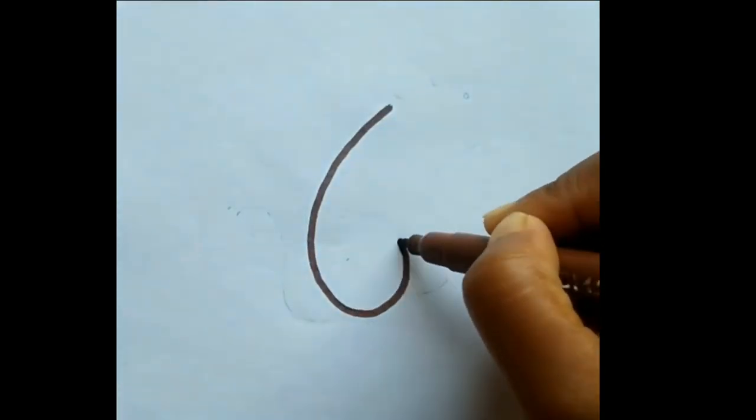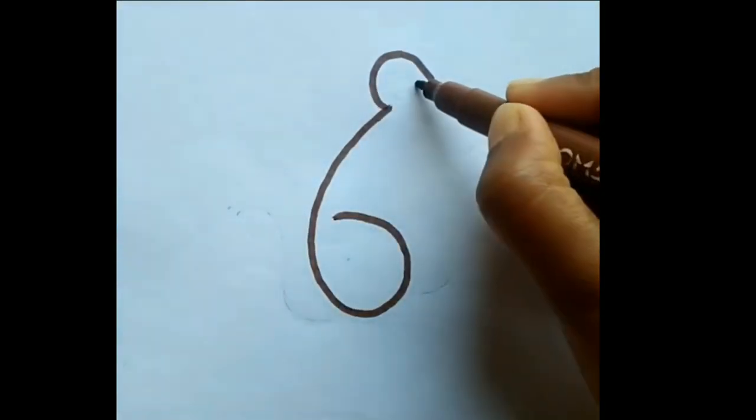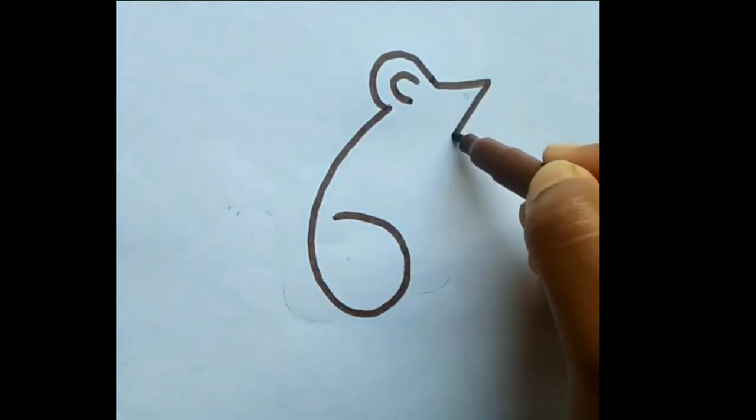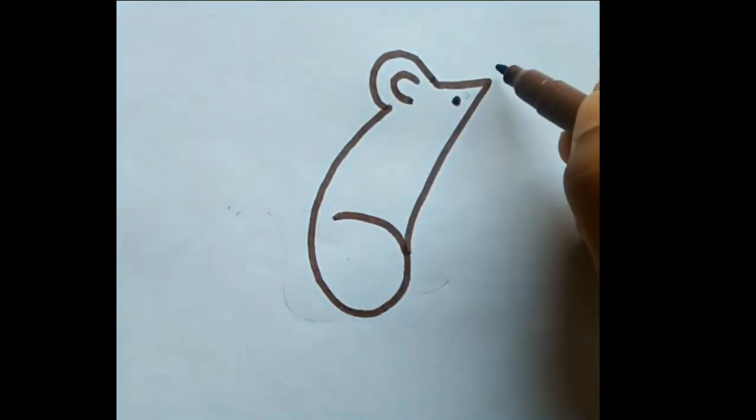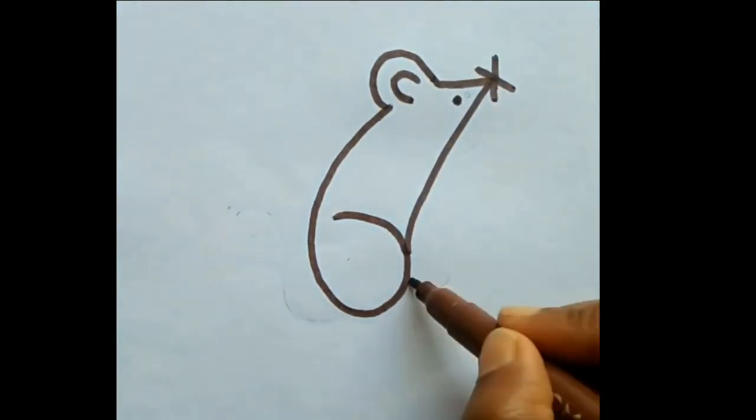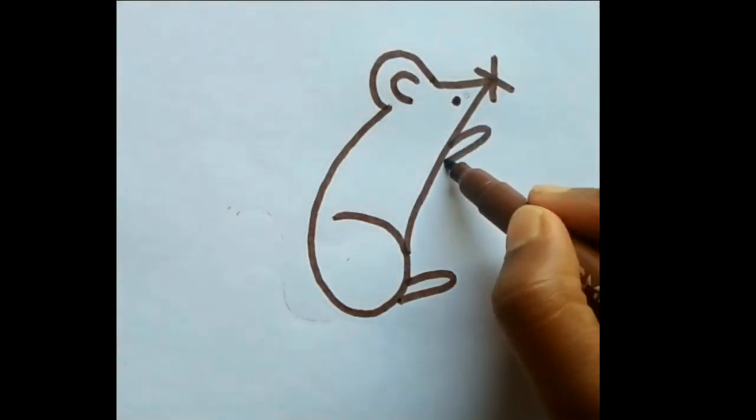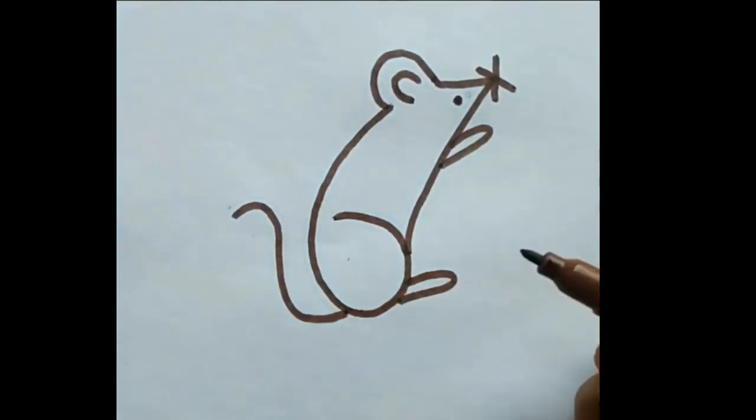Write a number 6. Write 2 C's. Write a number 7. Draw eyes and beard. Draw 2 feet. Finally draw a 2. A simple little mouse is finished.